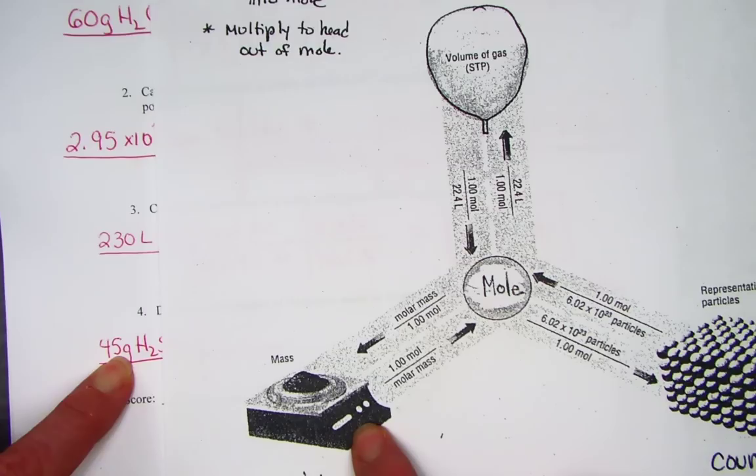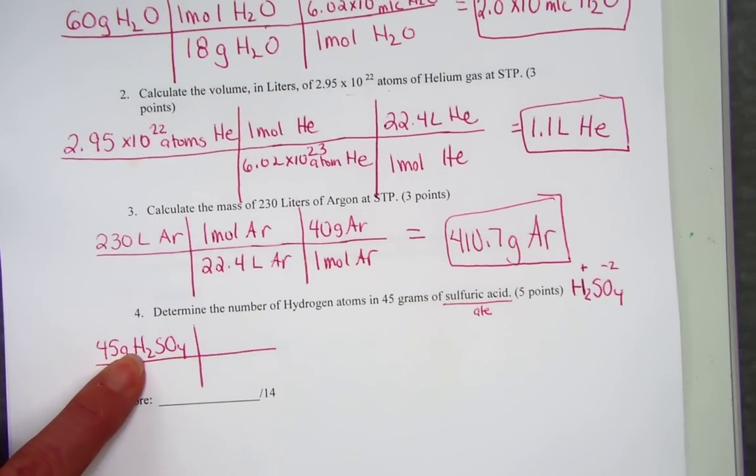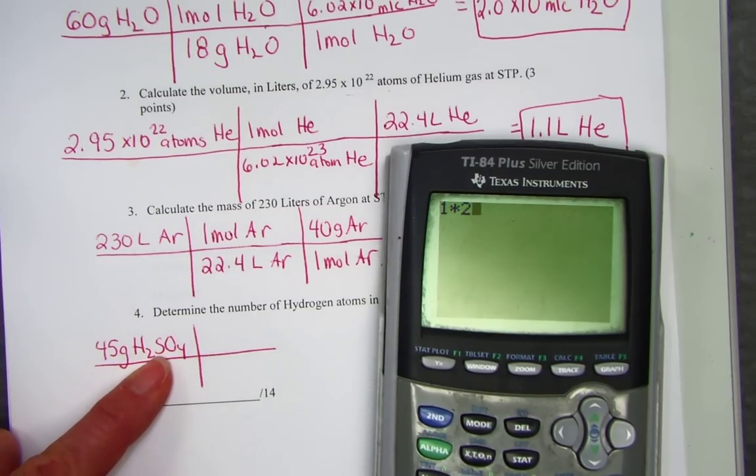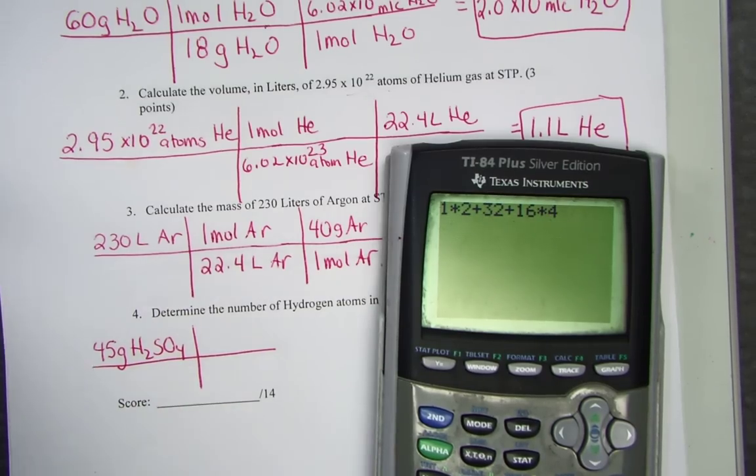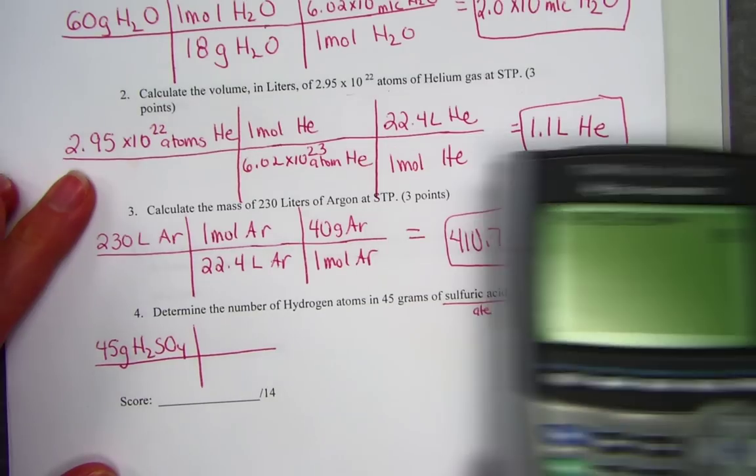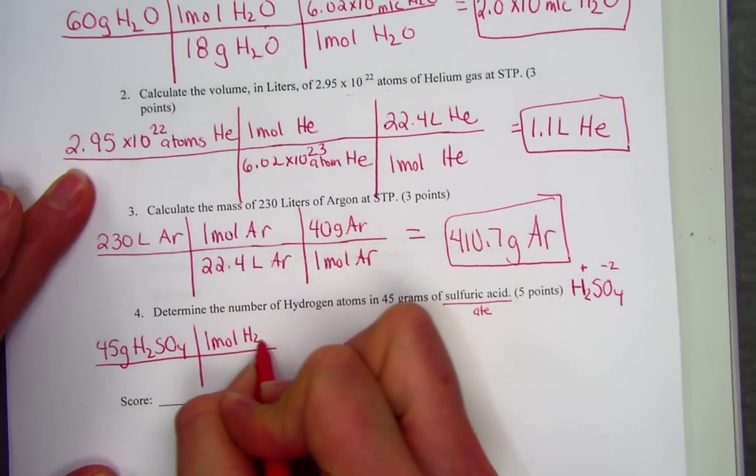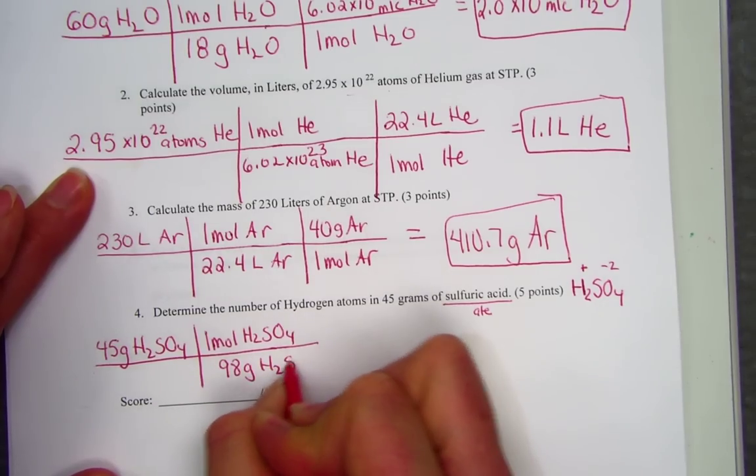We'll need a molar mass of H2SO4. Hydrogen weighs 1, but there's two of them. Sulfur has an atomic weight of 32, and oxygen has an atomic weight of 16, but I count four of those. So the molar mass is 98 for sulfuric acid. If we had one mole of sulfuric acid, it would weigh 98 grams.